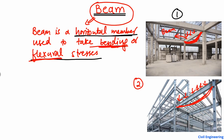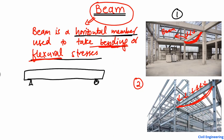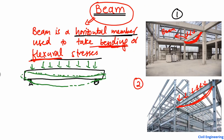In a simpler example, consider two supports — a hinge and a roller support — with a rectangular beam supported between them. There is some load acting on this beam, maybe a uniformly distributed load or a point load. What will happen is the beam will try to deflect in this way — this will be the new deformed shape of the beam.